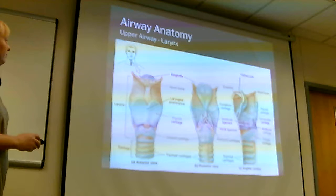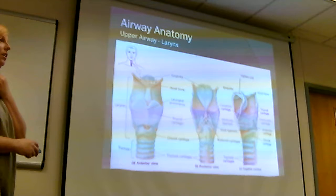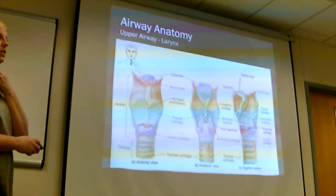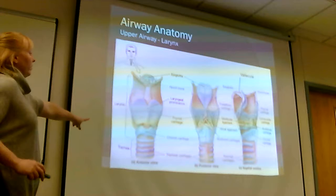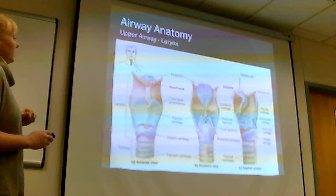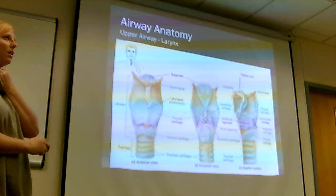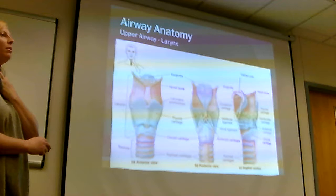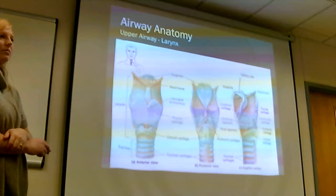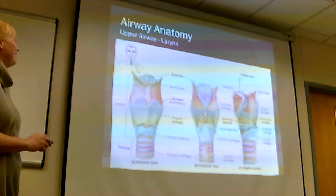Practice finding the cricothyroid membrane on yourself and others — feel for the thyroid cartilage, then rock your finger down and you'll feel a soft membranous area between the thyroid and cricoid cartilages. The thyroid cartilage is also where you can manipulate the airway during intubation to move the vocal cords into view. Try swallowing now to feel the cartilage move — it takes practice across different body types.